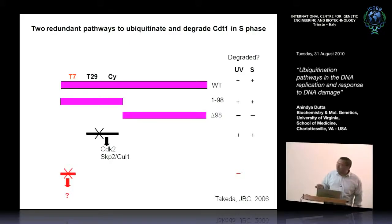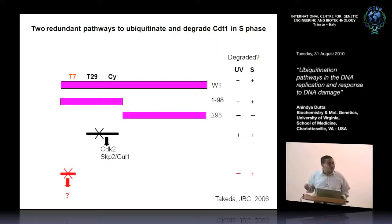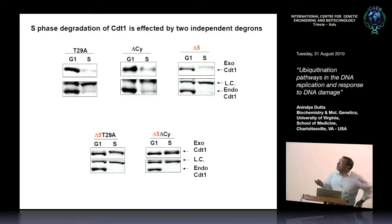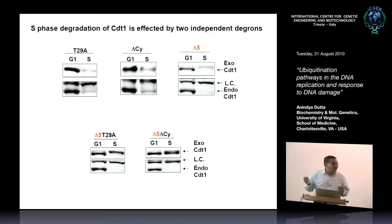When you mutated that threonine — what I'm calling the red module — CDT1 was no longer degraded after radiation. But when you mutate just the red module, the protein is still degraded in S phase. So there are two independent modules in this region responsible for degrading the protein in S phase. When we mutated both the red and the black module combined, now the CDT1 is stable. So there are two redundant pathways, which is why we had such a difficult time finding out how CDT1 was getting degraded in S phase.